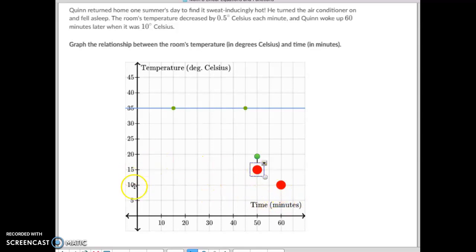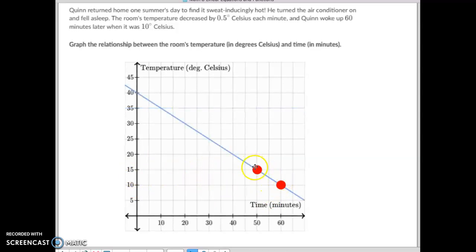And then what we can do is just take and draw a line connecting those two dots, knowing that when he fell asleep 60 minutes ago, it would have been 40 degrees Celsius in the home. And now, it's down to 10 degrees as it drops a half a degree per minute.